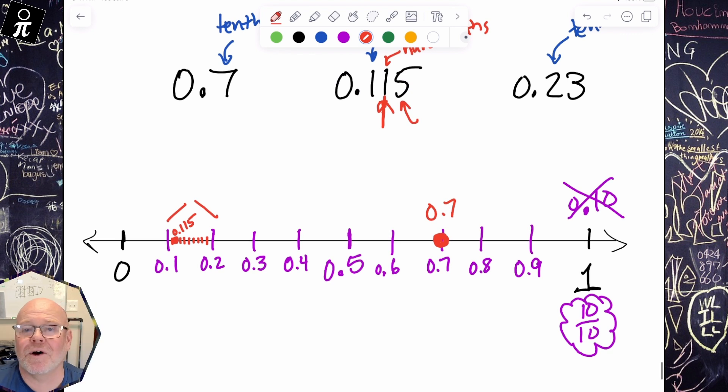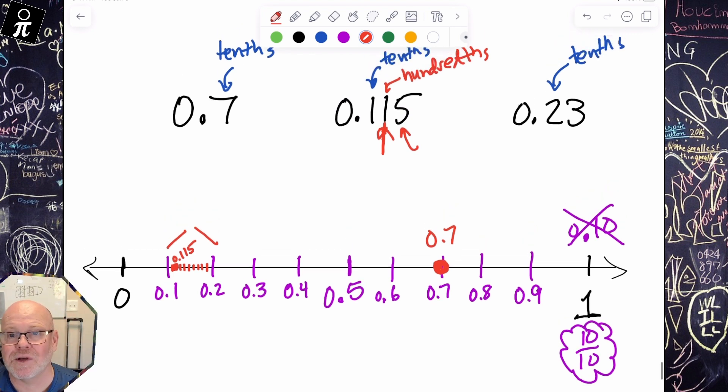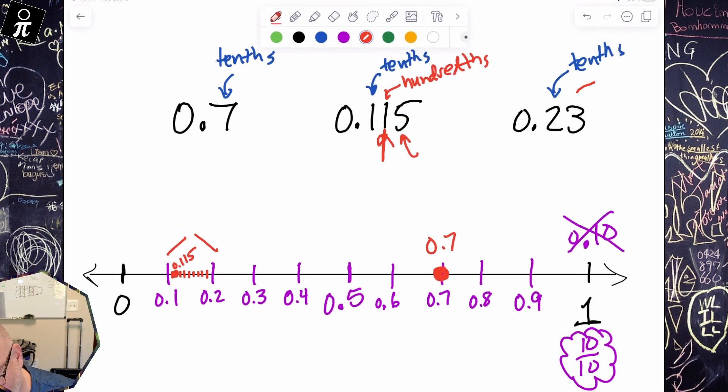And then 0.23. So once again, we know that this is the hundredths place, hundredths place. And we know that it lives somewhere in the neighborhood of the two-tenths neighborhood. So here's the two-tenths neighborhood. And then that three means we need to move over three additional tiny little hundredths.